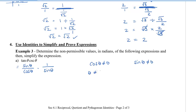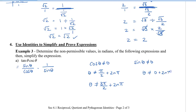We get cos theta can't equal 0 and sine theta can't equal 0. For cos theta: theta can't equal π/2 plus 2nπ, and also 3π/2 plus 2nπ, where n is an integer — these are the angles where cosine equals 0. For sine theta: theta can't equal 0 plus 2nπ, and also π plus 2nπ. Since 0 plus 2nπ already encompasses every π, we can combine these to say theta can't equal nπ, where n is an integer.